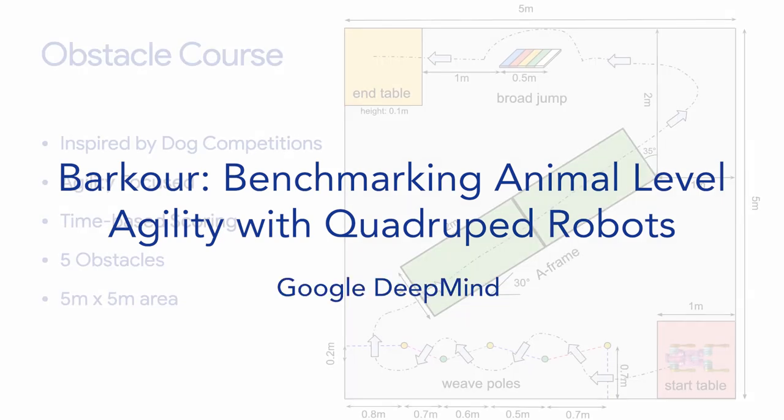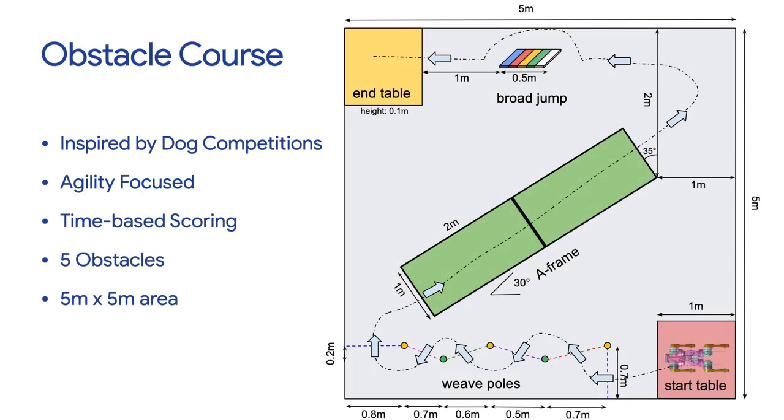We introduce the Barcore Benchmark, an obstacle course for quantifying agility for legged robots.